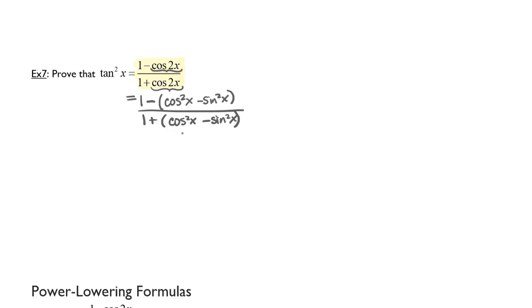Now at this point we need to look at the left hand side and determine what the numerator and the denominator represent. Remember that tangent of x is sine of x over cosine of x. So tangent squared of x is sine squared x over cosine squared x. I'm trying to simplify my numerator to look like sine squared x and my denominator to look like cosine squared x, which means I will replace anything with cosine as much as possible with a sine.